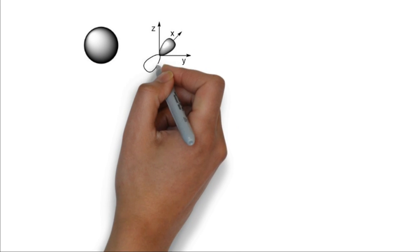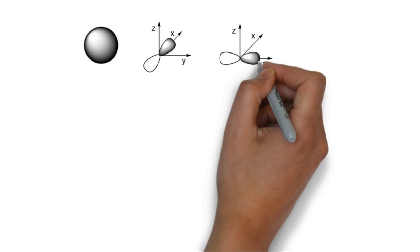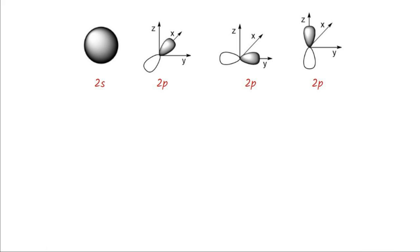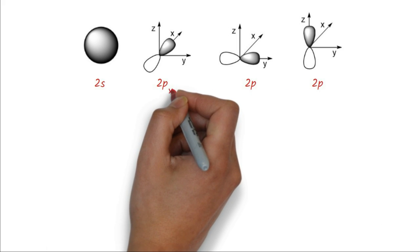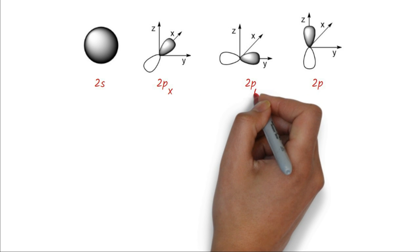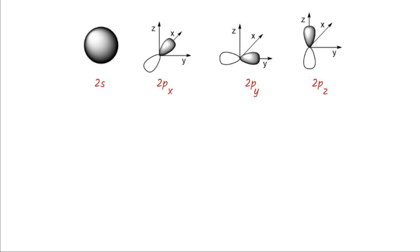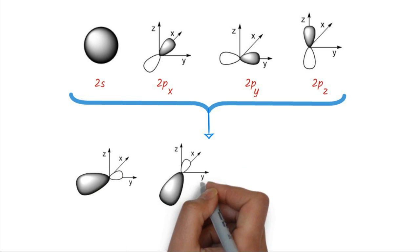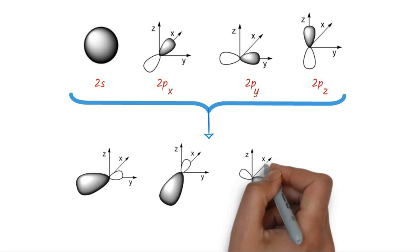If we draw the valence orbitals of carbon, for example, this is 2s orbital, and these are the 3 p orbitals. This on p-axis is called 2 p-x, and this on y-axis is called 2 p-y, and this on z-axis is called 2 p-z. These 1 s and 3 p-orbitals hybridize or blend to form equal number of hybrid orbitals called as sp3 hybrid orbitals.